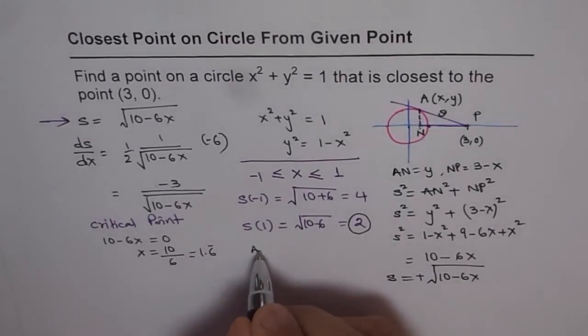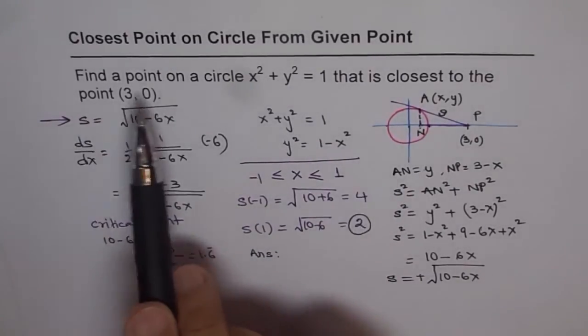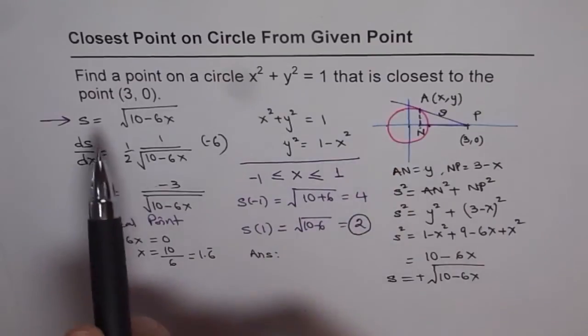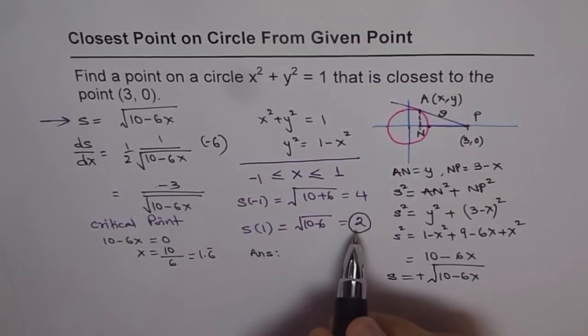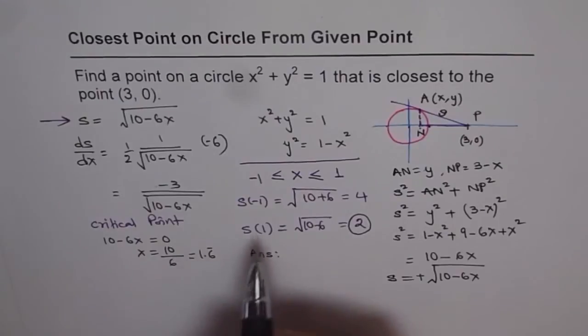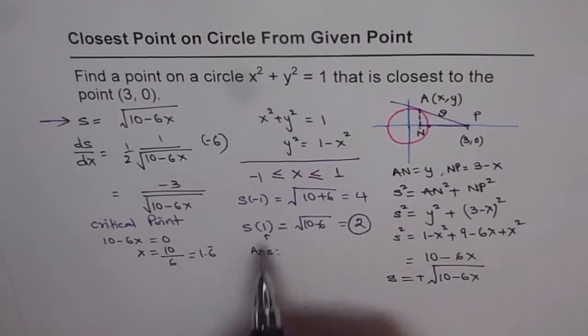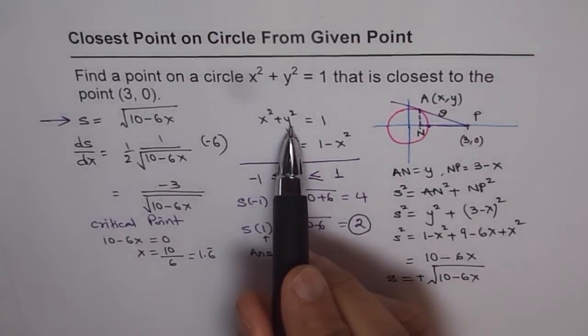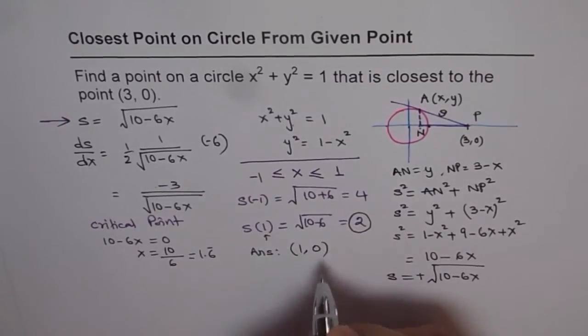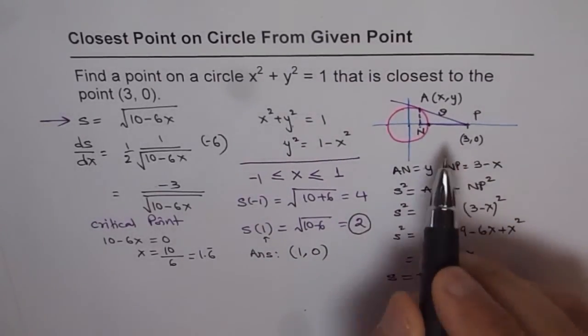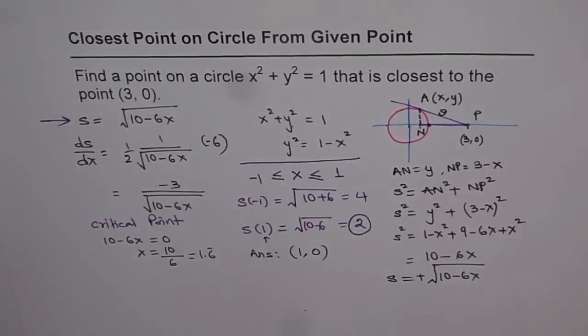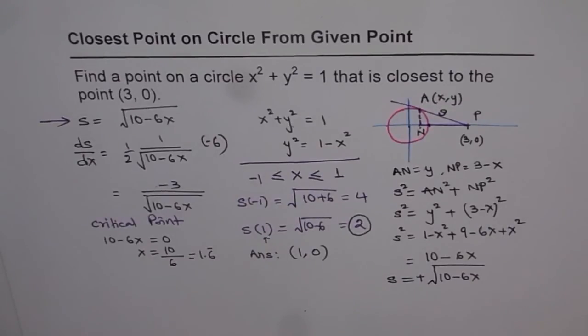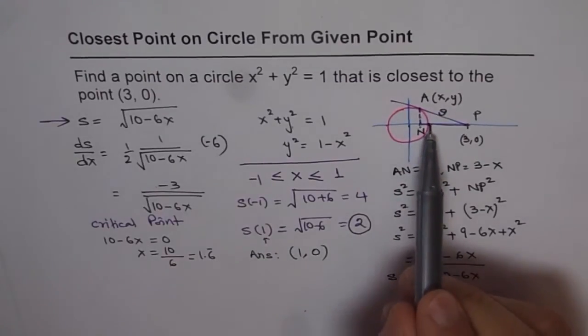And therefore I can write the answer as find a point on this circle that is closest to 3,0. X value is 1. This is my x value. If x is 1 then what is y? 0. So I have a point 1,0 which is this point that is closest to the given point. Now once we get the answer it looks obvious. That's the beauty of the question. So after doing all this, we found that the closest point is actually this.